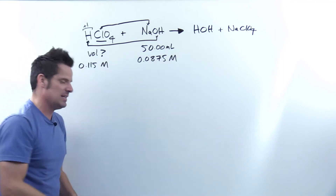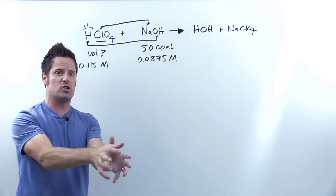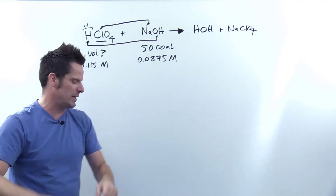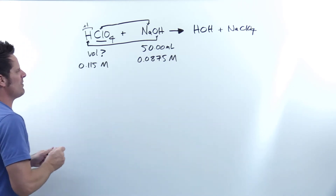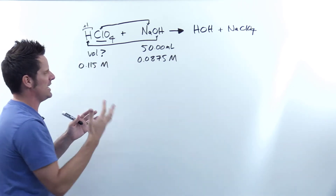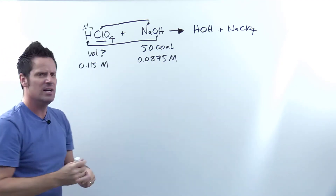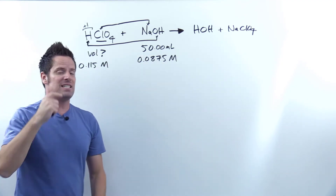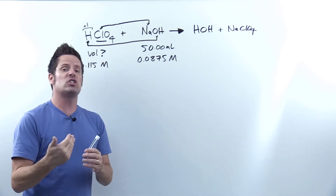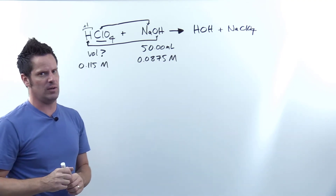This is, believe it or not, a dimensional analysis slash unit conversion problem using principles discussed in an earlier video, also linked in the description below. Whenever I'm dealing with a dimensional analysis problem and I'm given lots of values, where do I start? My tip is: most of the time, the vast majority of cases, I always start with whichever value has no denominator units.